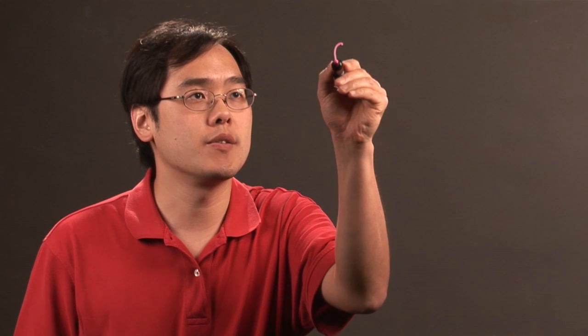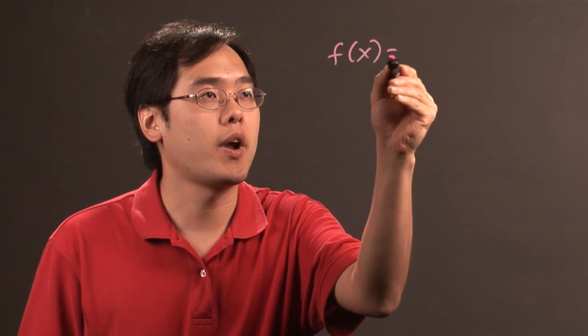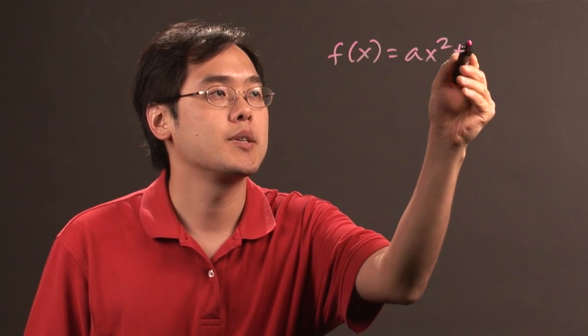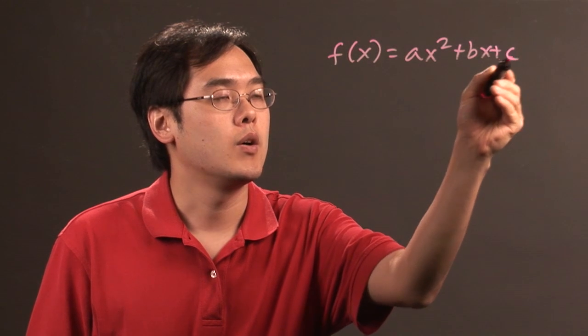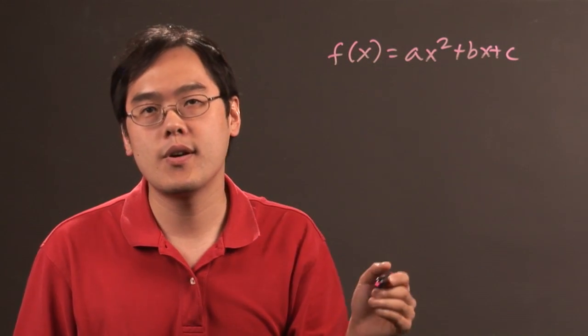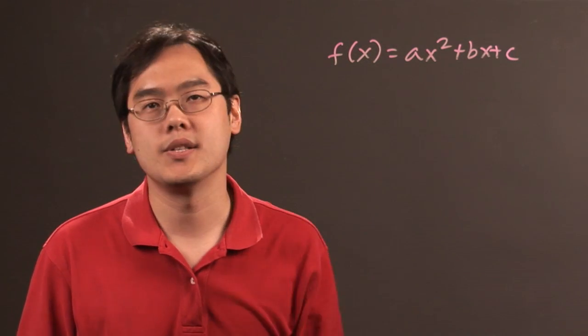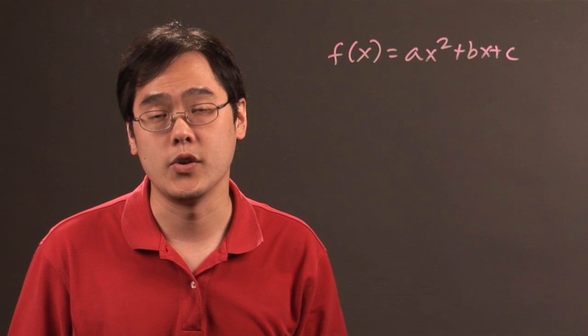Now as you know, a quadratic function is of the form ax squared plus bx plus c, where a is not equal to zero and b and c are just numbers, constants if you will.